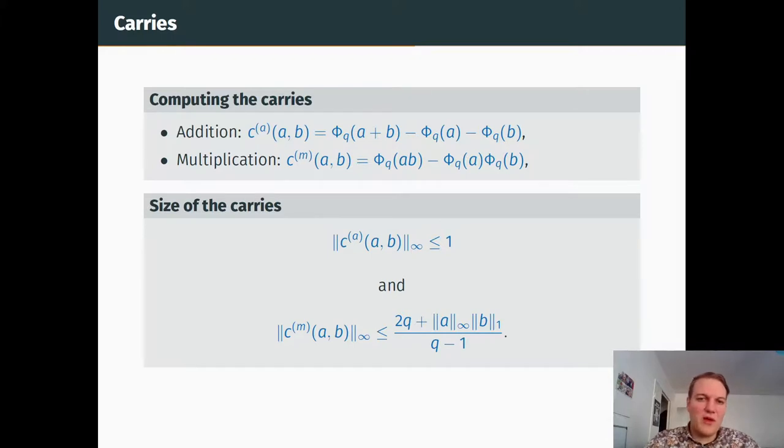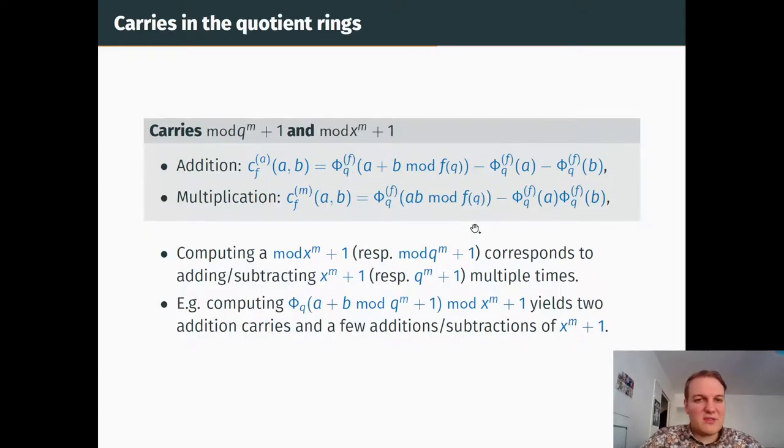Remember, here we are working from Z to Z_q[x], and we want to work mod f(q) and mod f. We define the same thing, but this time with mods wherever needed. Every time I want to compute a mod, be it polynomial or integer, I just need to add or subtract a certain number of times a certain quantity. In the end, I'm able to express the carries mod f and mod f(q) as functions of the previous carries that I had.